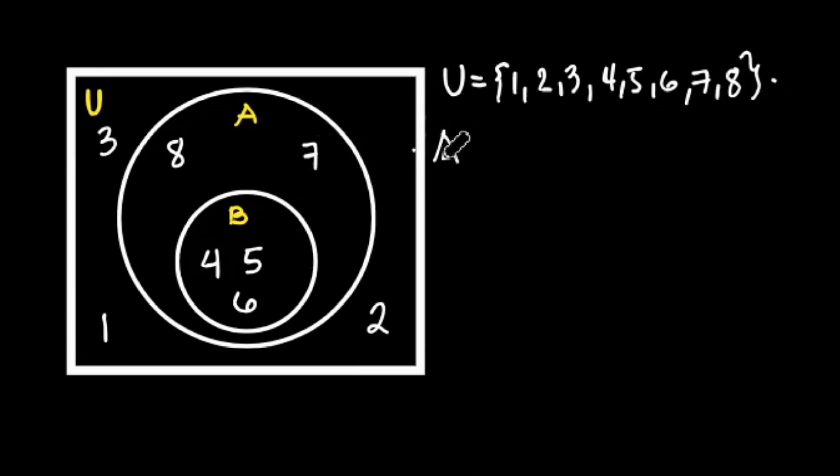Let us identify the elements in set A. What are the elements of set A? Of course, since set A is this circle, this diagram, it means all the elements inside are part of set A. So we have 4, 5, 6, 7, 8.